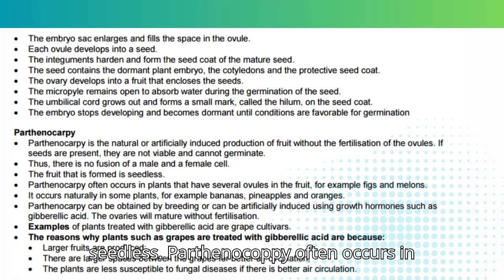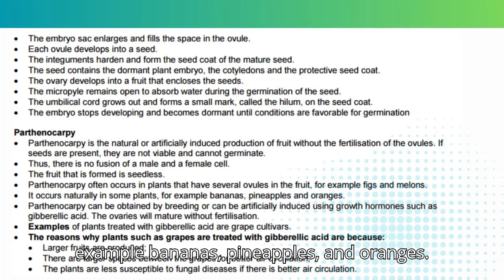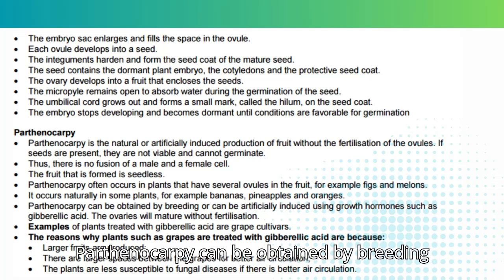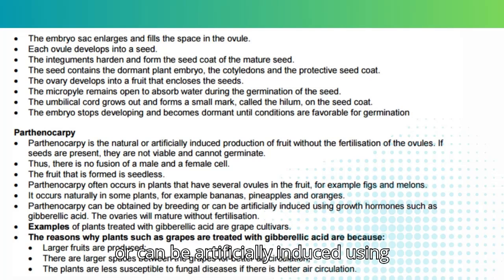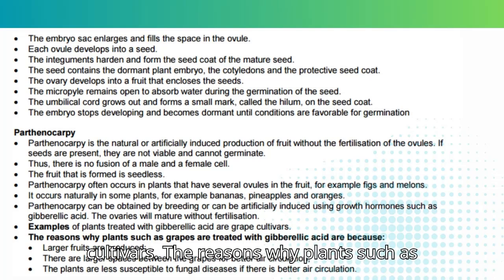Parthenocarpy often occurs in plants that have several ovules in the fruit, for example figs and melons. It occurs naturally in some plants, for example bananas, pineapples and oranges. Parthenocarpy can be obtained by breeding or can be artificially induced using growth hormones such as gibberellic acid, which causes the ovaries to mature without fertilization. Examples of plants treated with gibberellic acid are grape cultivars.